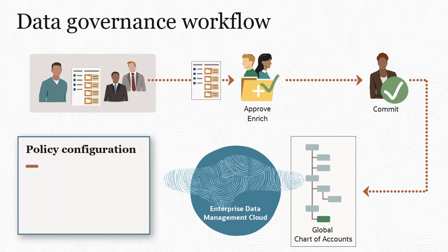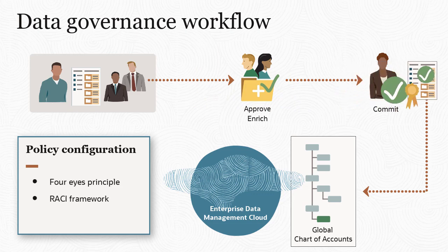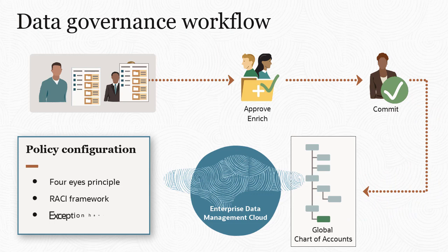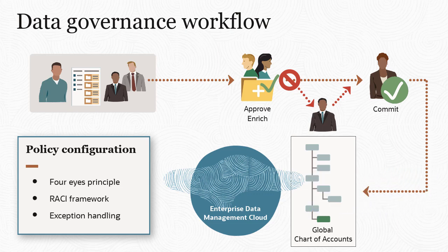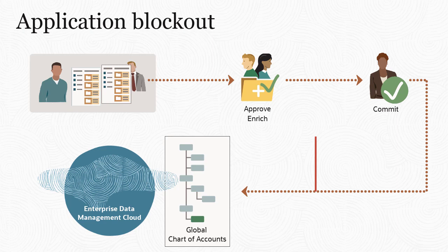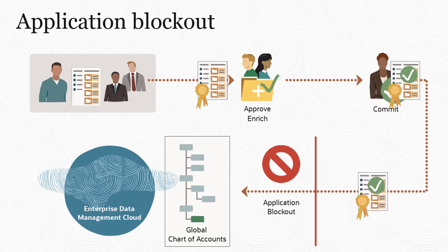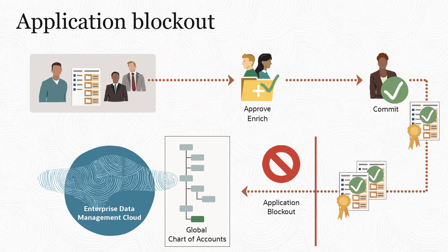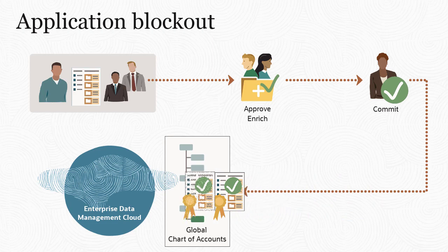Policy configuration options support the 4Is principle to ensure that at least two users review requests before data is committed, and the Responsible, Accountable, Consulted, and Informed framework. To keep your workflows moving, you can include exception handling for when approval or commit stages time out, or when policies can't be fulfilled — for example, when a request requires three approvals but only two approvers are available. If you need to temporarily disable changes, like during a month-end close period, application blockout settings let you pause changes before they're written without interrupting any of the earlier workflow stages. Removing the blockout allows changes that have stacked up at the end of the workflow to be validated and completed.